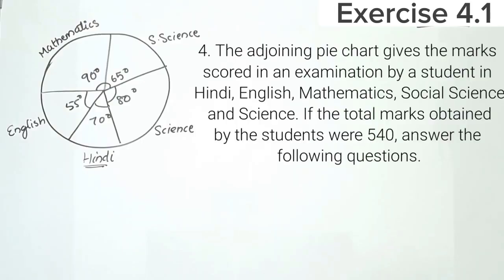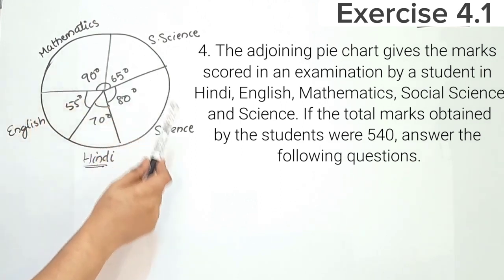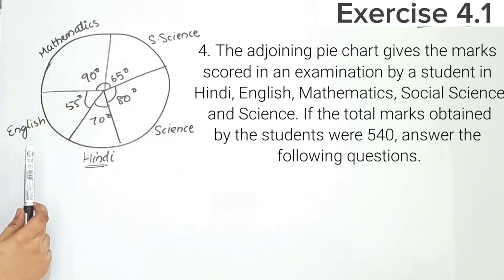Hello everyone, welcome to this video. Welcome to exercise 4.1 question number 4 in the textbook, exercise 5.2 question number 4. If the total marks obtained by the student were 540, answer the following questions. Here we have a pie chart. In this chart, the subjects shown are Social Sciences, Science, Hindi, and English. We have a central angle for each subject.